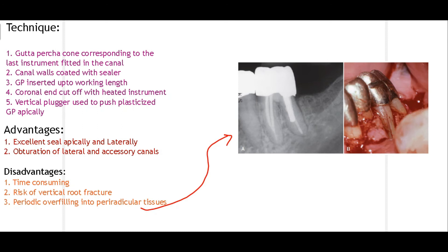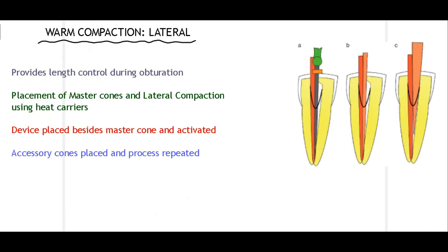Disadvantages of warm vertical compaction: it is time consuming. Using the vertical plugger applies mechanical force on the canals, which can lead to vertical root fracture — as seen in this clinical picture where excessive mechanical force led to a vertical root fracture visible both clinically and radiographically. Additionally, the vertical force may lead to periodic overfilling into periradicular tissues, causing irritation of those tissues.